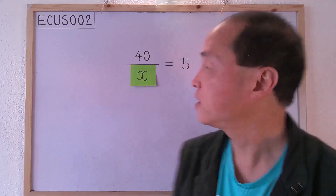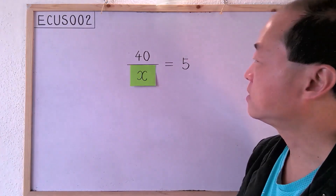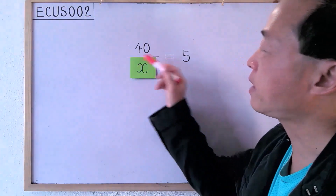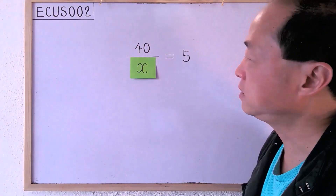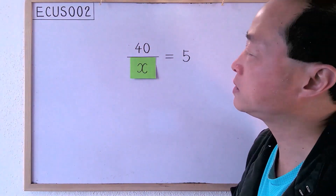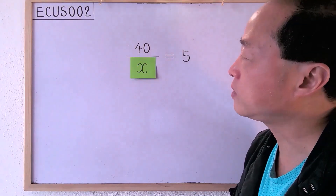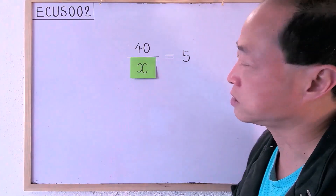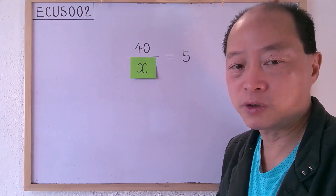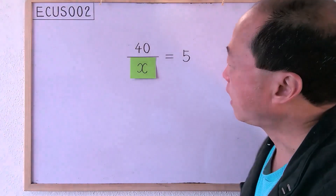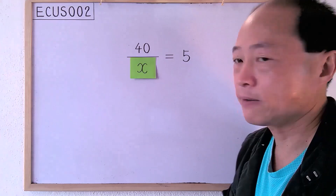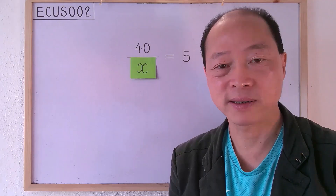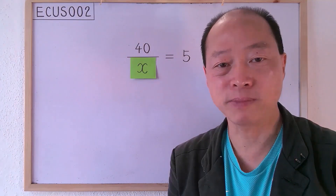Let's think of it this way. Look at this — it is an equation, meaning that the value on the left equals the value on the right. If the number behind x is 200, what we have on the left is a fraction with 40 as the numerator and 200 as the denominator. Obviously, the numerator 40 is smaller than the denominator 200. When 40 is divided by 200, the result is less than 1. However, the number on the right is 5. How can a value that is less than 1 on the left equal 5 on the right? This means that the number behind x cannot be 200.